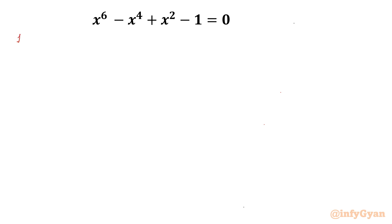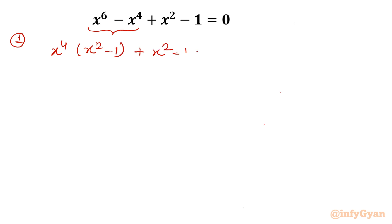Let me write approach number one. I will consider the first two terms — we can take x⁴ common. Once I take x⁴ common, it would leave x² - 1 plus x² - 1 equal to 0. Now it is visible that x² - 1 is common again, so what would be left in the bracket is x⁴ + 1 equal to 0.